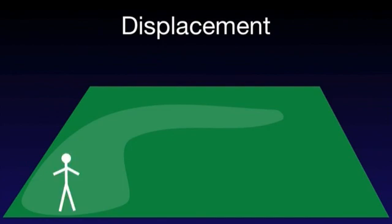In general, displacement refers to a moving object that changes its position. Displacement is a vector that points from a body's initial position towards its final position. The magnitude of the displacement is the length of the shortest line between the initial and the final position.